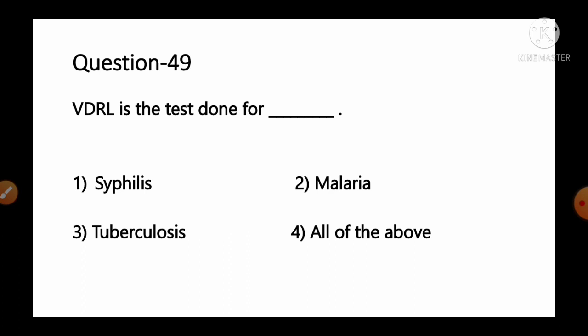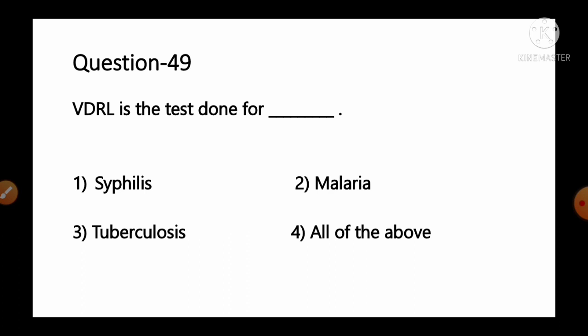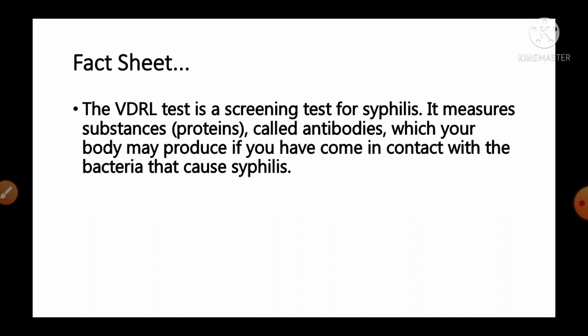Question number 49: VDRL test is the test done for — options: 1) syphilis, 2) malaria, 3) tuberculosis, 4) all of the above. The VDRL test is a screening test for syphilis. It measures antibodies that your body may produce if you have come in contact with the bacteria that cause syphilis. So option number 1, syphilis, is the correct answer.